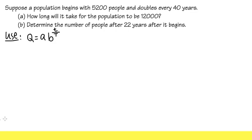Let me just go back and I'll tell you what is what. Initially we have 5,200 people. So that means A equals 5,200. And it says doubles, that means B equals two. And lastly, it says every 40 years, that means capital T equals 40.